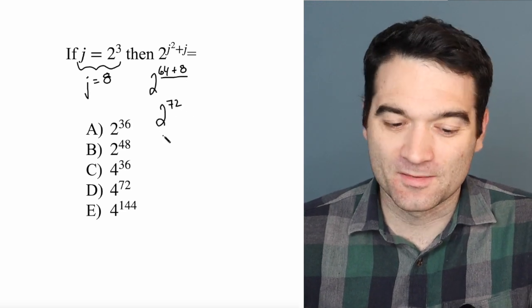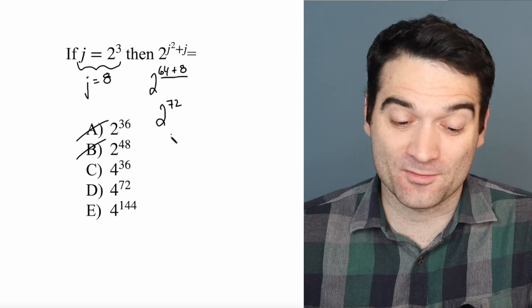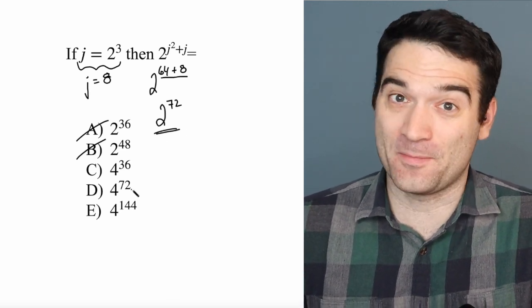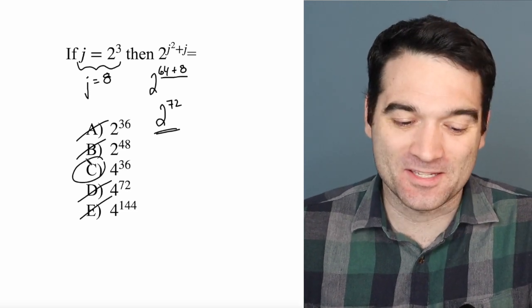Well, watch this. We know that A and B are way too small. 2 to the power of 36 and 2 to the power of 48 are smaller than 2 to the power of 72. But we also know that 2 to the power of 72 is smaller than 4 to the power of 72. So the answer has to be C.